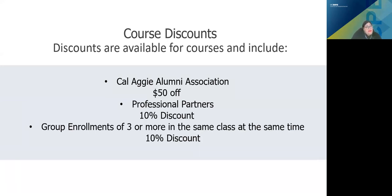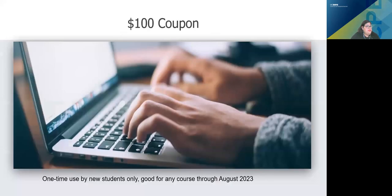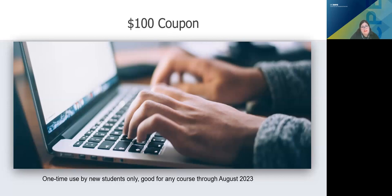We do offer discounts on most of our courses. Members of the Cal Aggie Alumni Association enjoy $50 off our courses. Note that this is a reciprocal benefit that extends to members of the UC Alumni Association. Our professional partners receive a 10% discount, as well as groups of three or more enrolling in the same class at the same time with the same payment method. If you have colleagues you may be looking to take the same course with, make sure you coordinate your enrollment so you can get that 10% off. There's a full list of discounts available on our website. To thank you for attending today, you will be emailed a $100 coupon that is good for one-time use by new students only and good for any course. This coupon does expire, so please be sure to use it before May 1st, 2024.